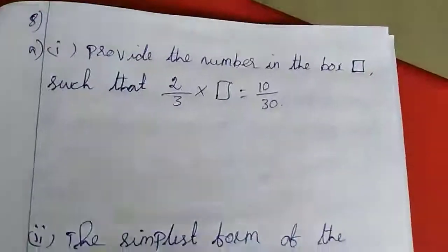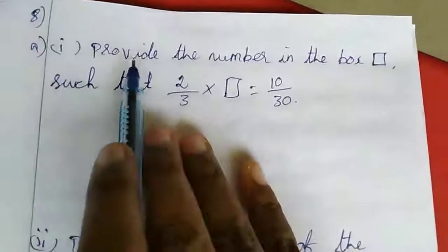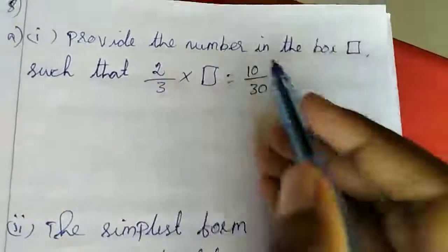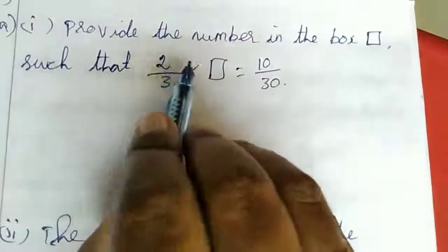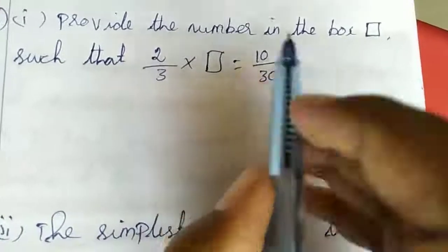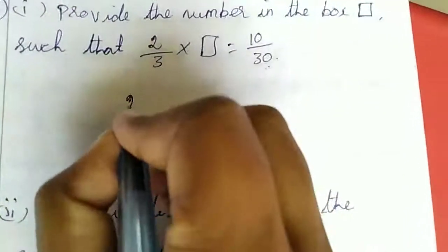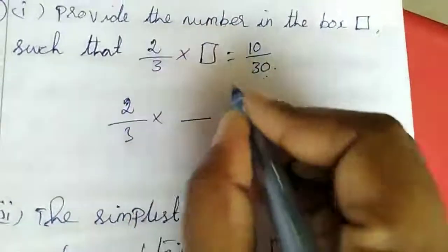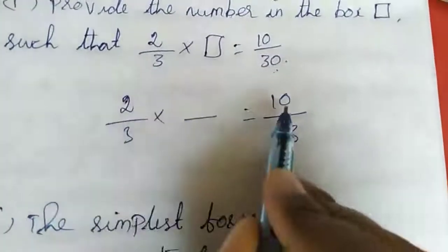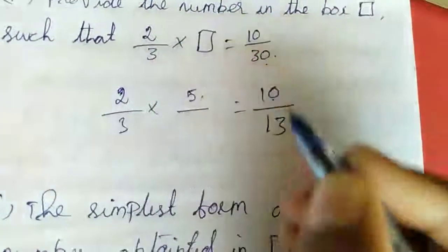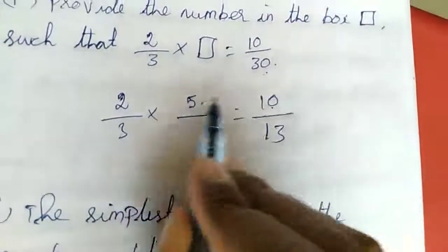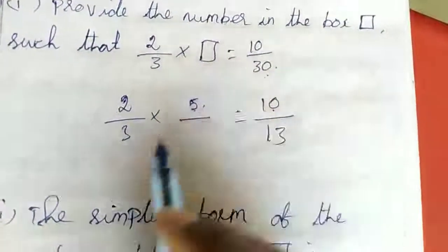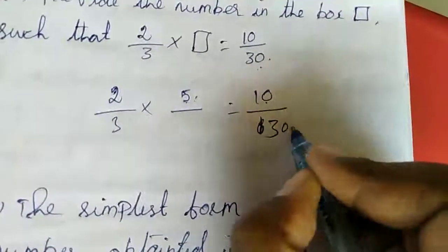8th sum: Provide the number in the box such that 2 by 3 into some fraction equal to 10 by 30. This fraction only we want to find. 2 into which number gives 10? 2 fives are 10. So that fraction numerator is 5. Denominator: 3 into which number gives 30? 3 tens are 30.